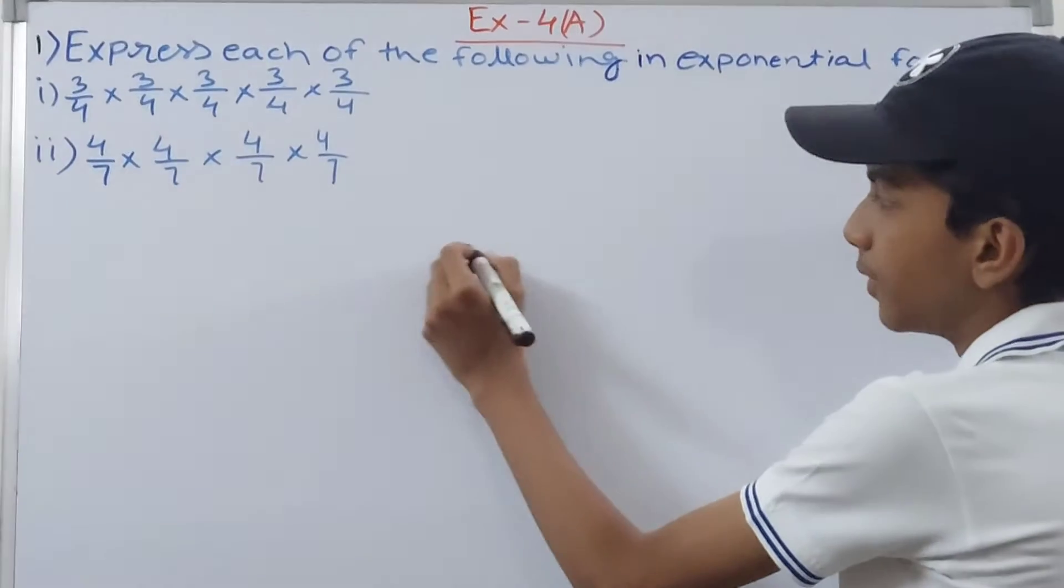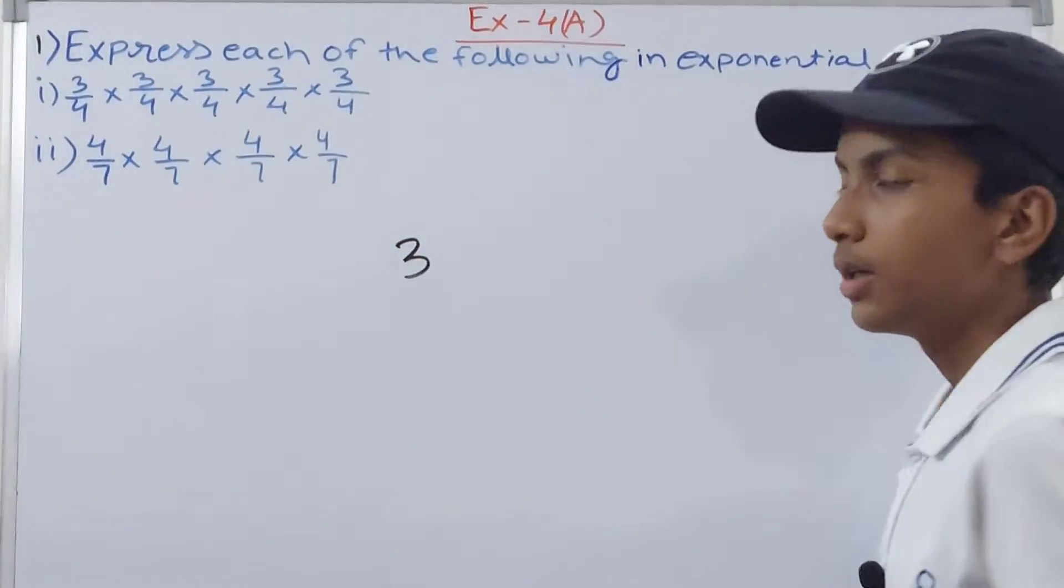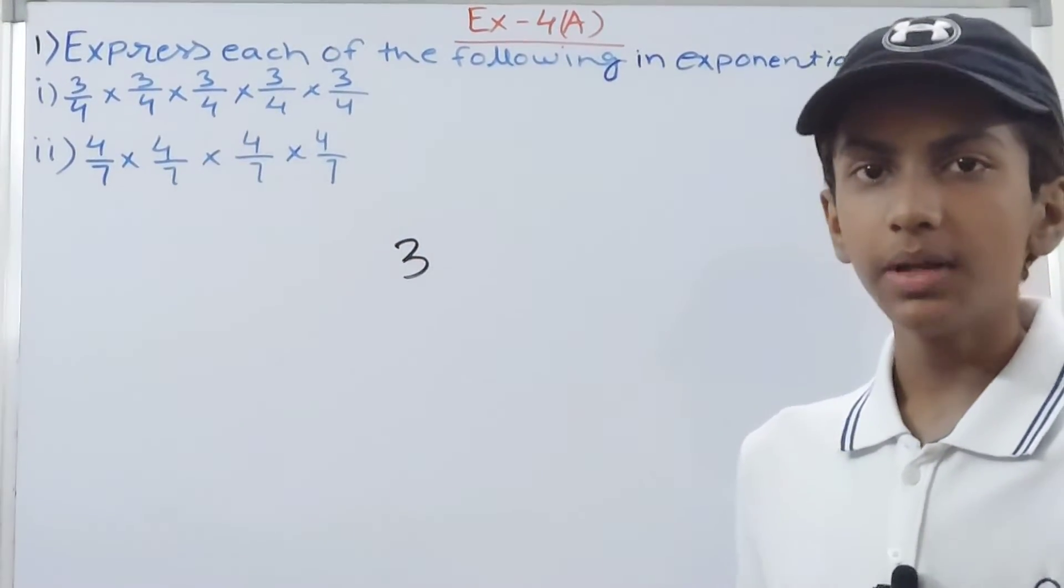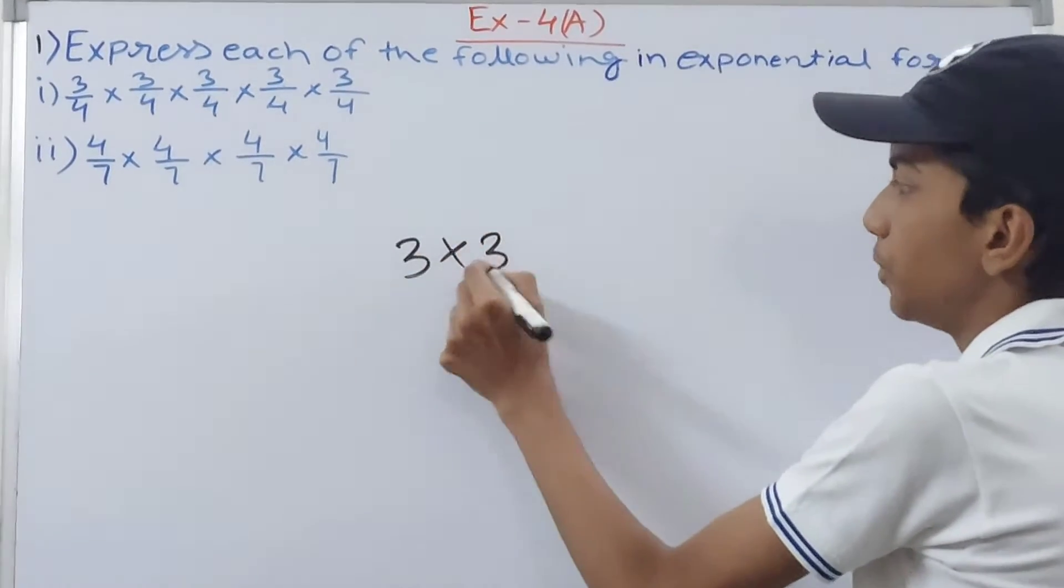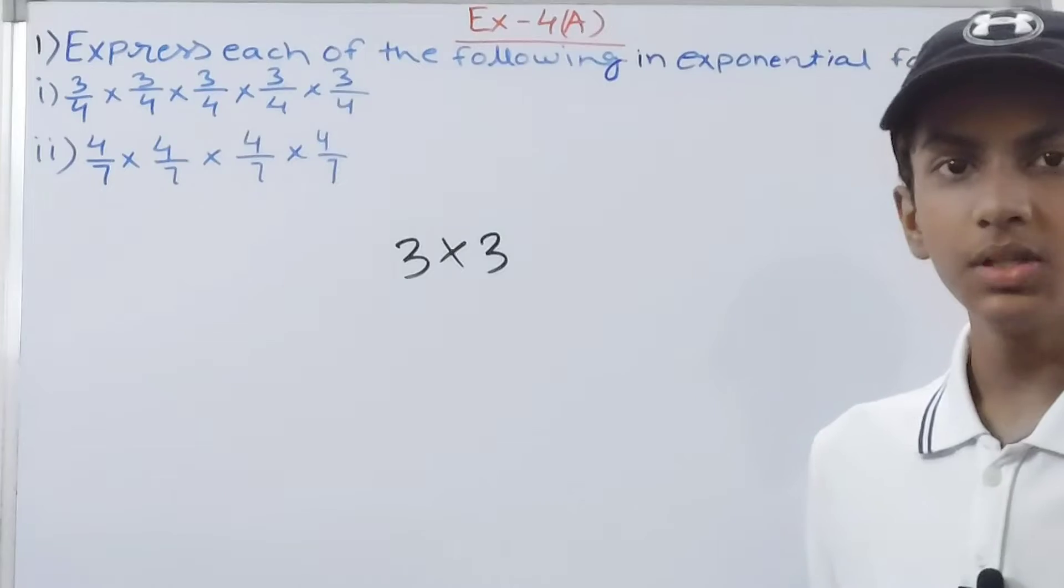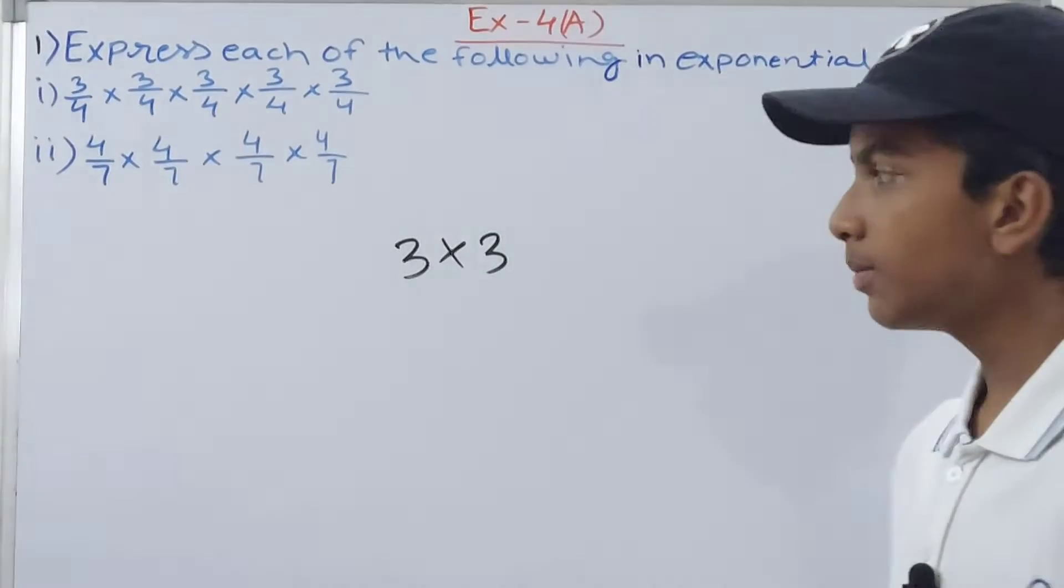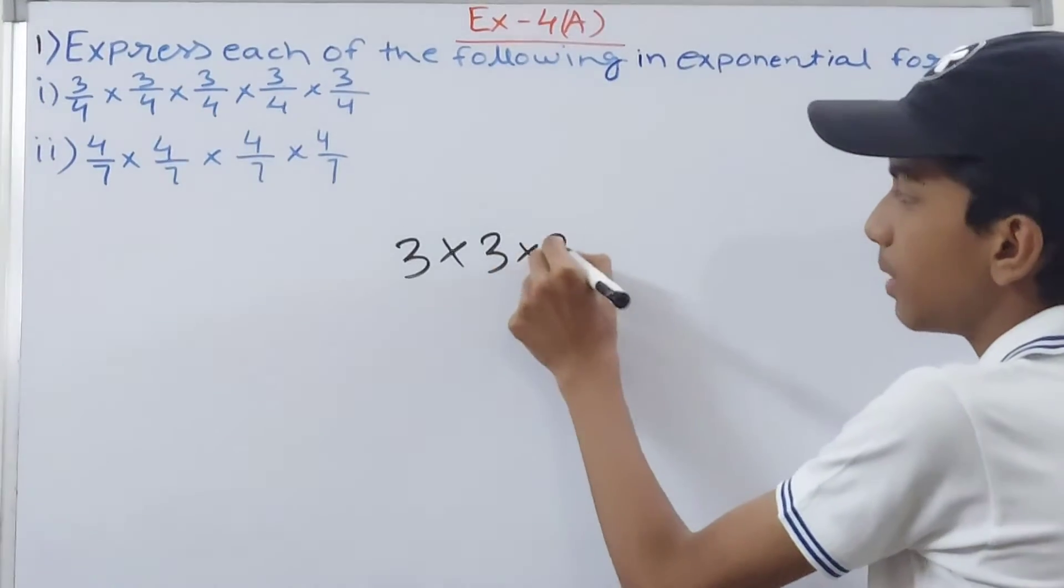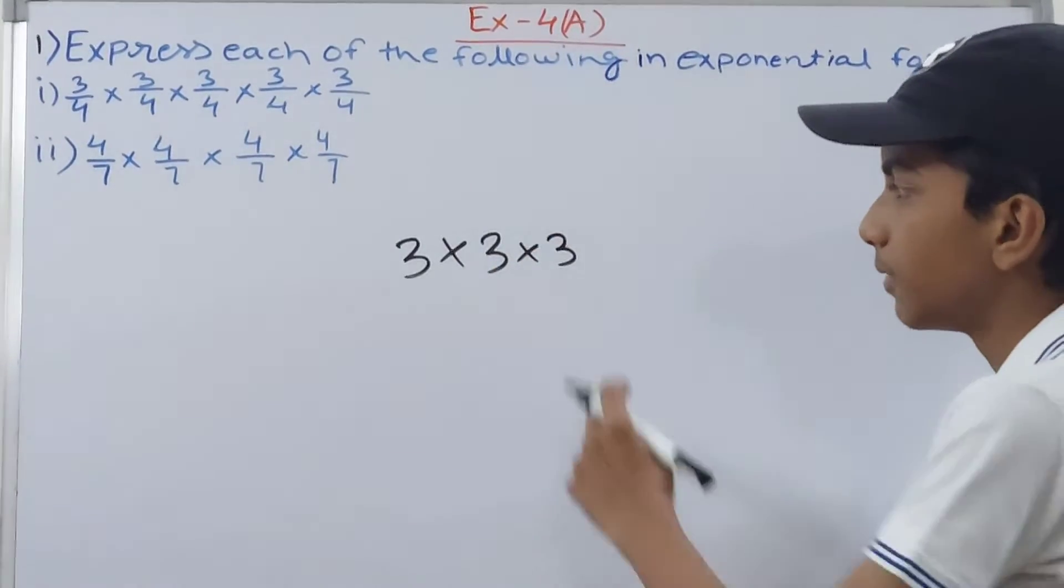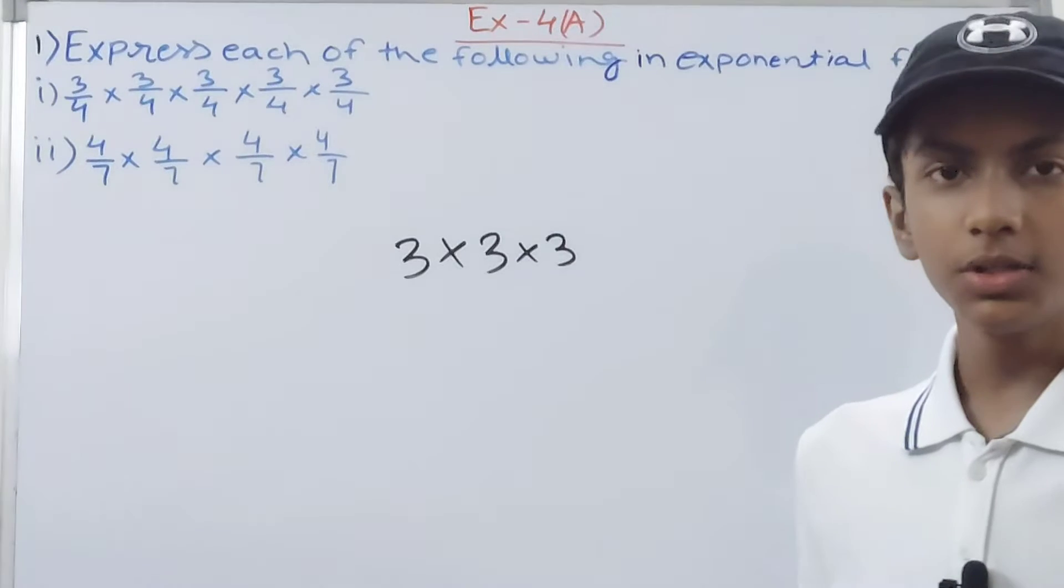Let's take a number. If I have 3 here, and I multiply 3 by 3 two times, this means I'm multiplying 3 two times, so 3 into 3. If I add one more 3 to this by multiplying, not adding, multiply by one more 3, so 3 into 3 into 3.